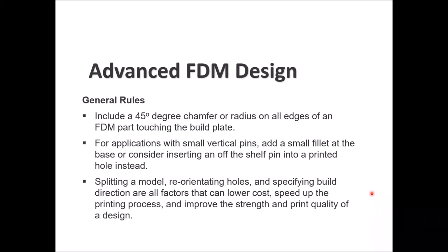Include a 45-degree chamfer or radius on all sharp edges for FDM parts, especially those touching the build plate. For applications with small vertical pins, add a small fillet at the base or consider inserting an off-the-shelf pin into a printed hole. You can always split the model, reorient holes, and specify the build direction to lower cost, speed up printing, and improve strength and print quality.